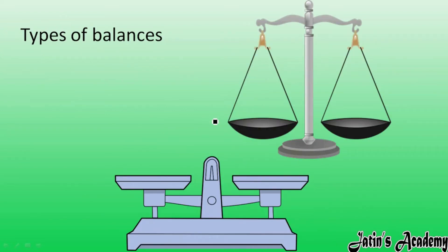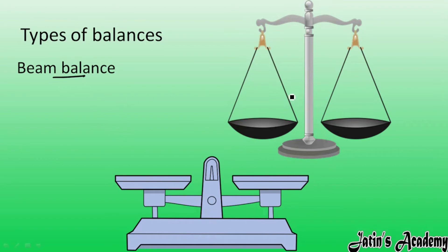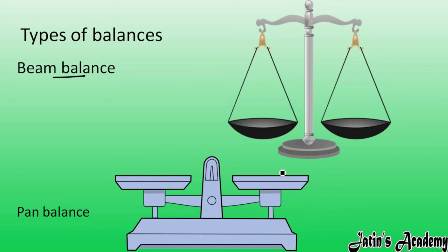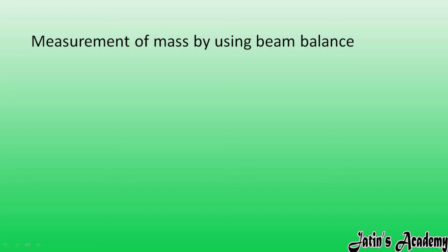Next we have types of balances used to measure mass. We mostly use the beam balance to check the mass of any quantity. If a question asks which instrument you can use to measure mass, the answer is a beam balance. Instead of a beam balance, you can also use a pan balance — you place the object on one side and the standard weight on the other, and when they balance, you calculate the mass.